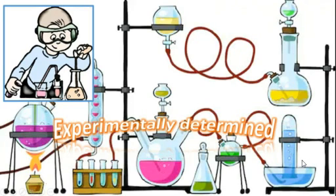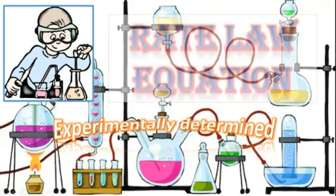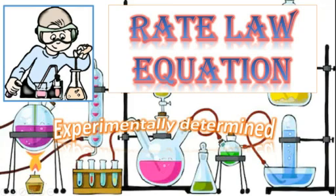Welcome back to the study of chemical kinetics. In the previous video, we had seen what is instantaneous rate, what is average rate, what is the difference between these two, and how to calculate it from the graph. So now, in this video, we shall be discussing about yet another type of equation which will help us to calculate the rate of a reaction. This particular method is experimentally determined and it is known as rate equation, rate law, or rate law expression.